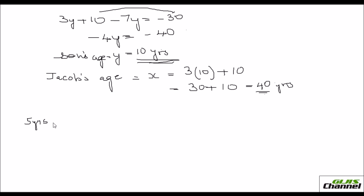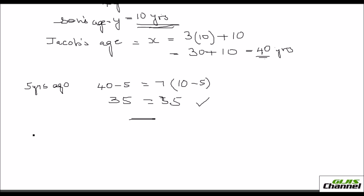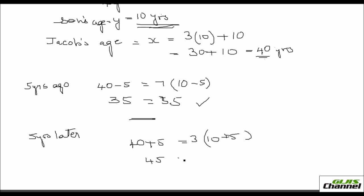Let's check: 5 years ago, 40 minus 5 equals 35, and 7 times (10 minus 5) equals 35. So 35 equals 35 — correct. For 5 years later: Jacob is 45, son is 15, and 3 times 15 is 45. Both checks confirm the answer is right.